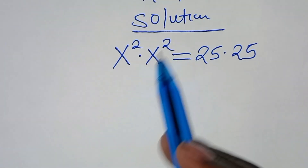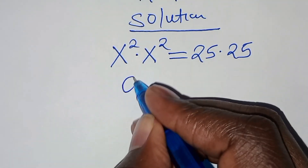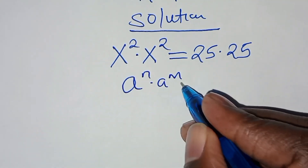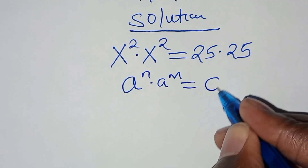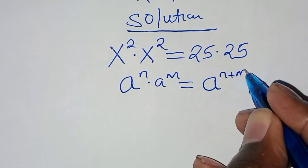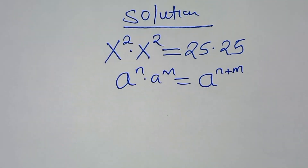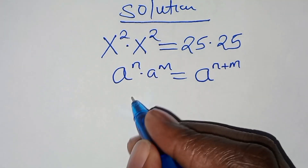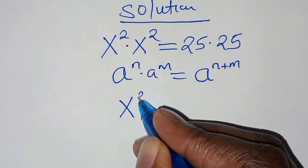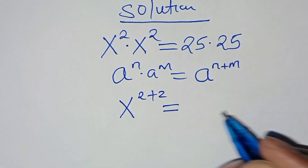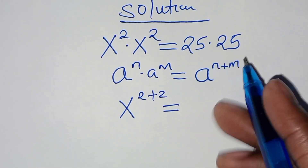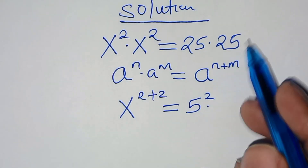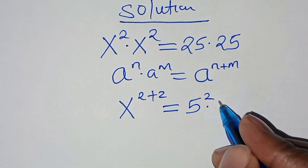So x to the power 2 times x to the power 2 is in the form of a to the power n times a to the power m, which we can express as a to the power n plus m. Applying this exponent property, we have x to the power 2 plus 2, and on the right side we can express 25 as 5 to the power 2 times 5 to the power 2.